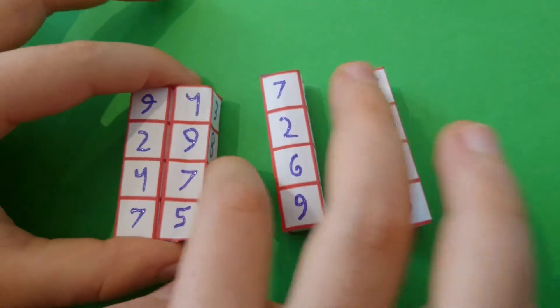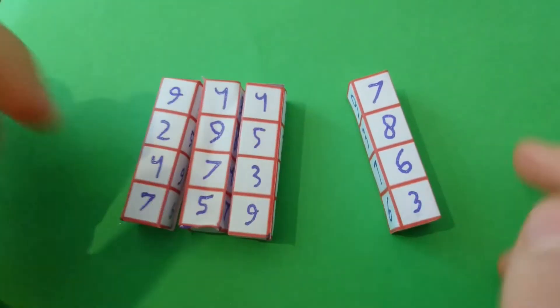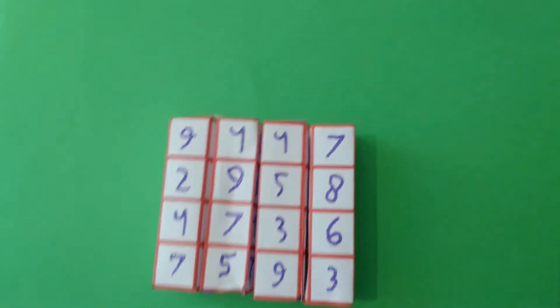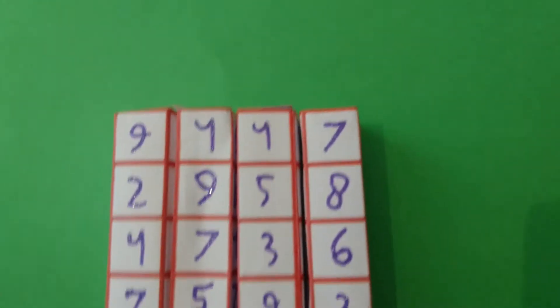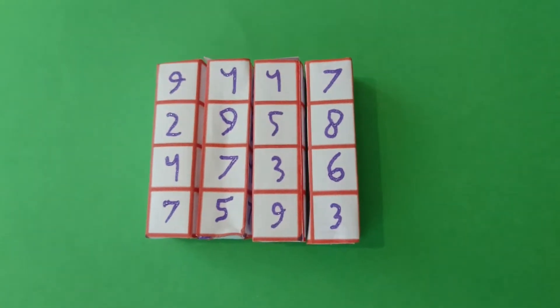And so now what I've made is I'm going to combine each of these like that. I've made four four-digit numbers now.